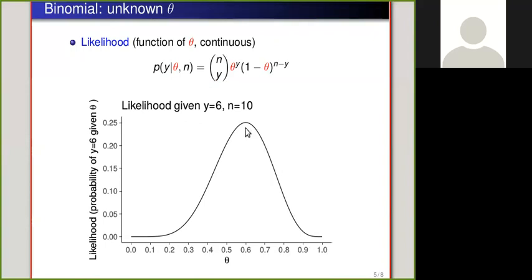This likelihood function looks like a probability distribution, but there's something different from usually used probability distributions. As in the discrete case, we want to have that probability of theta being less than 0 is 0, and probability that theta is less than 1 is 1.